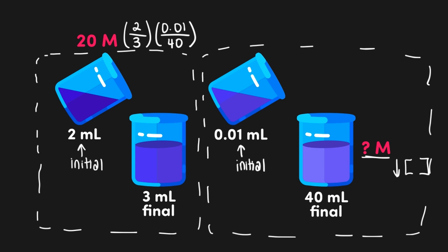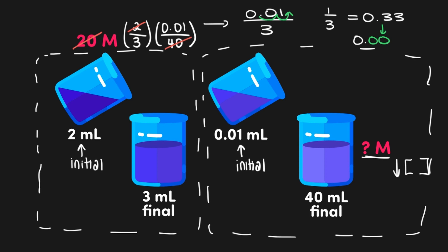We take the starting concentration of 20 molar and multiply by both dilution factors: 20 times (2/3) times (0.01/40). We simplify by recognizing that 20 times 2 equals 40, so the 40s cancel on top and bottom, leaving 0.01 over 3. Treating it first as 1/3 gives approximately 0.33. Since we approximated 0.01 as 1, we are off by 2 decimal places, making the number smaller — so we move the decimal 2 places, giving a final concentration of 0.0033 molar.